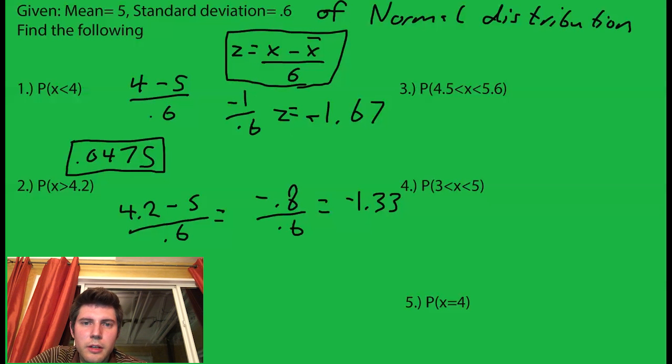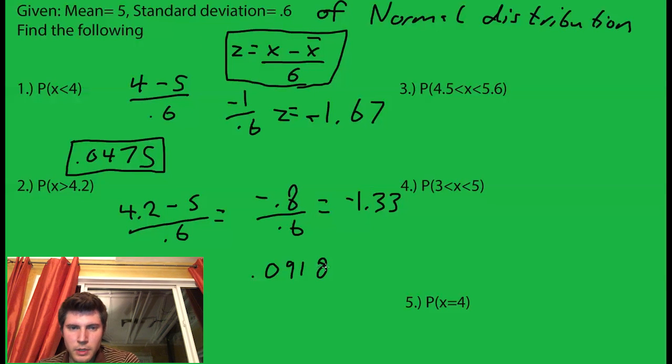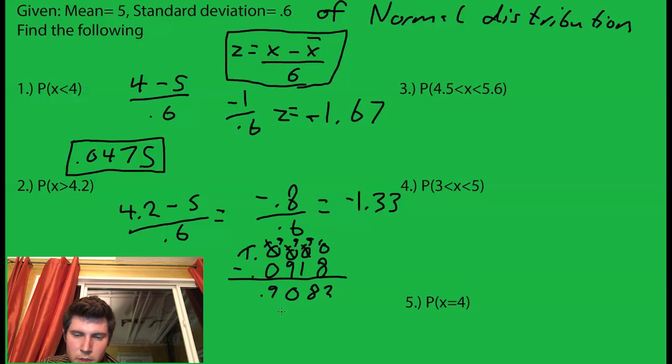So we look up negative 1.33, which gives us 0.0918, and that's everything less than. But we're asking what's the probability x is greater than 4.2, so we're going to do 1 minus this, and that gives us 0.9082. So it's 90.82 percent that our x is greater than 4.2 if the mean is 5 and the standard deviation is 0.6.